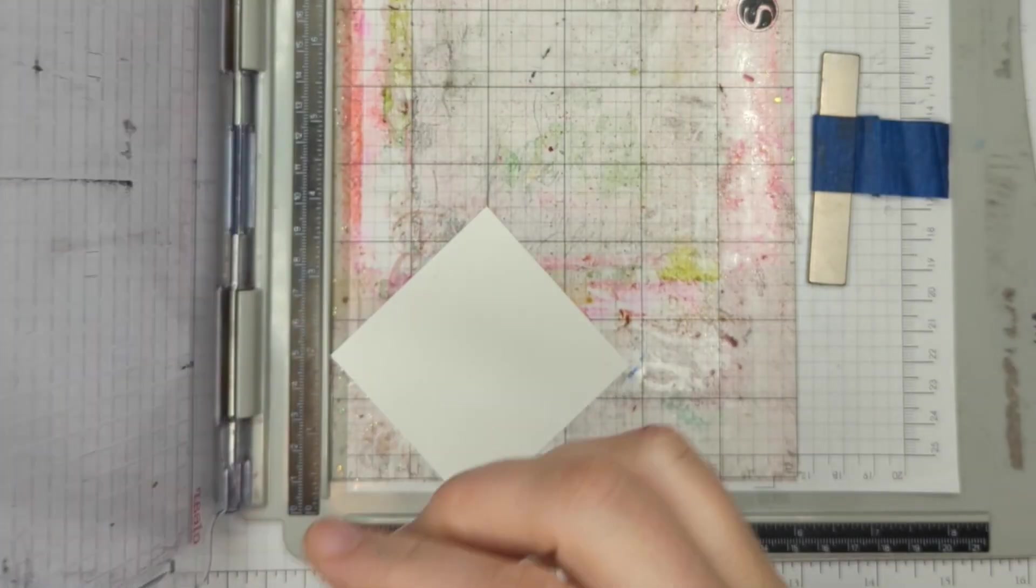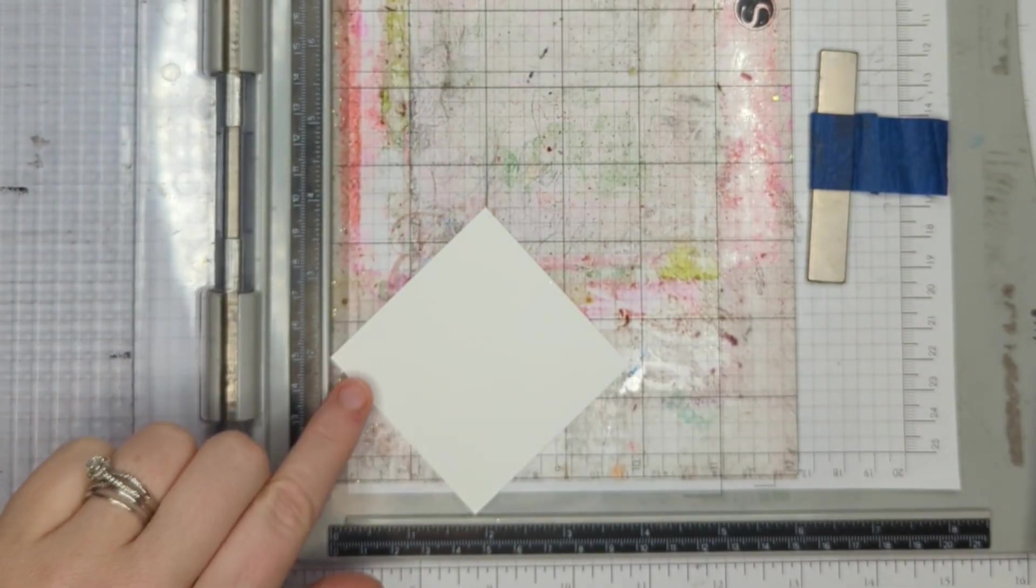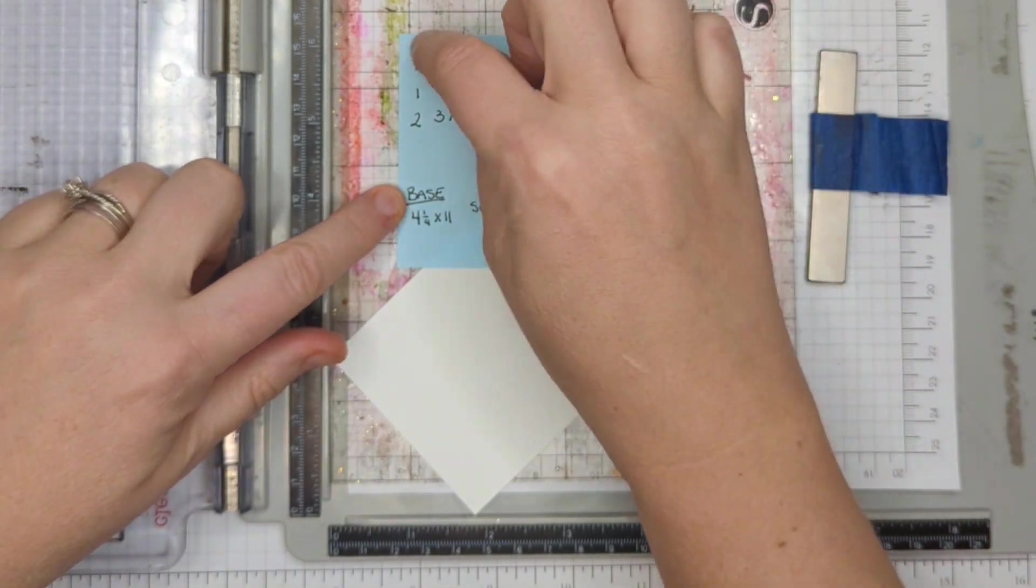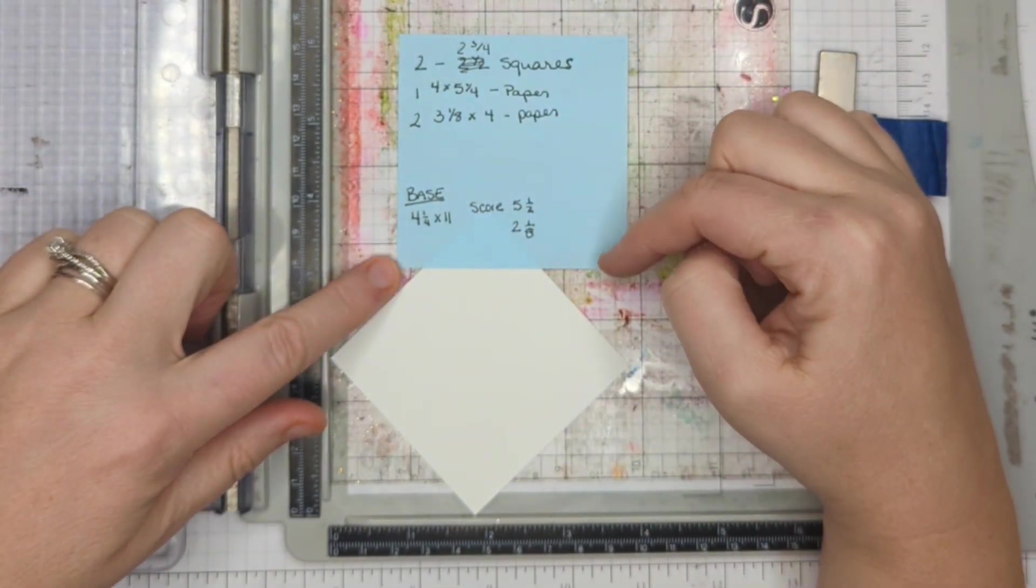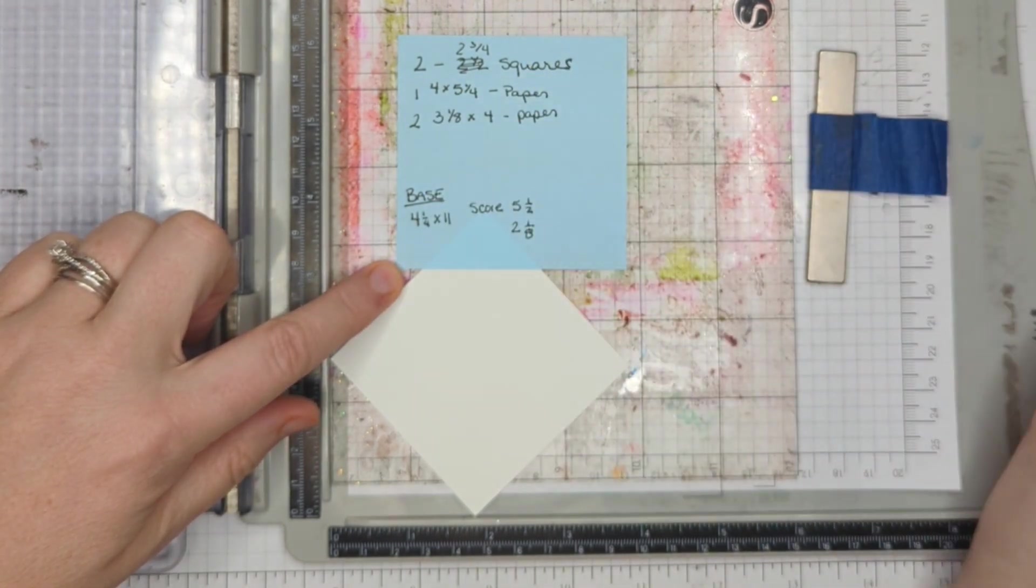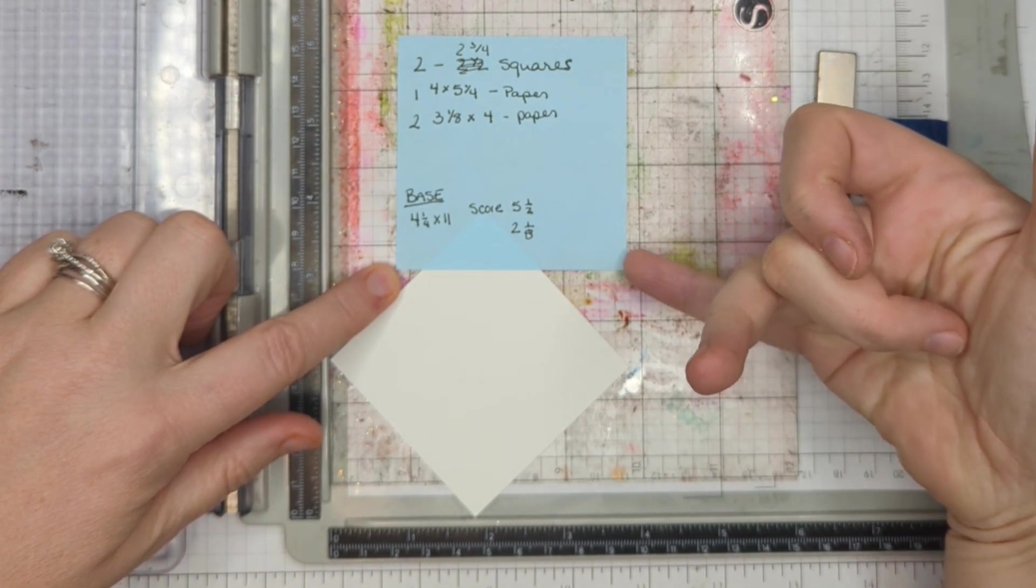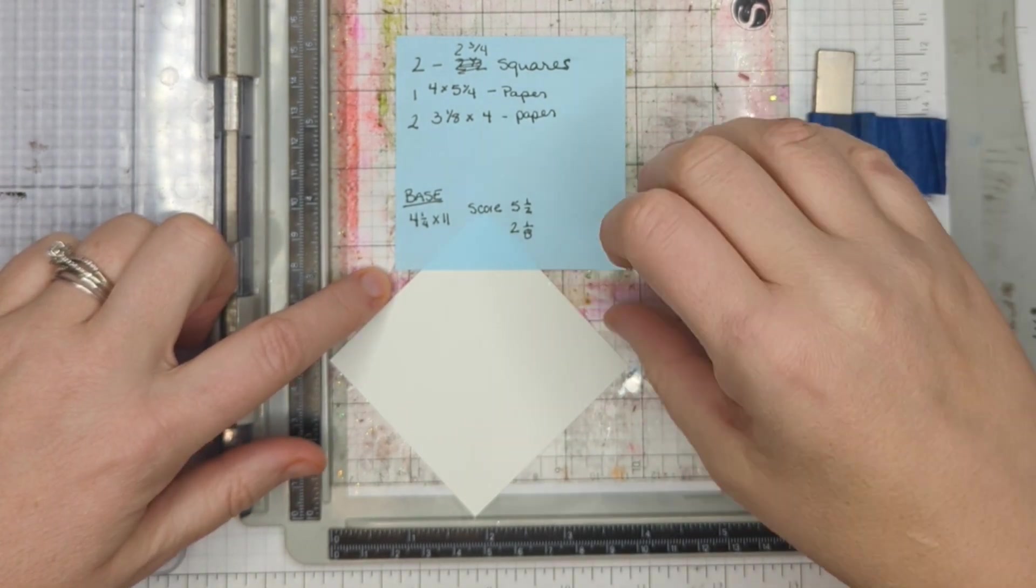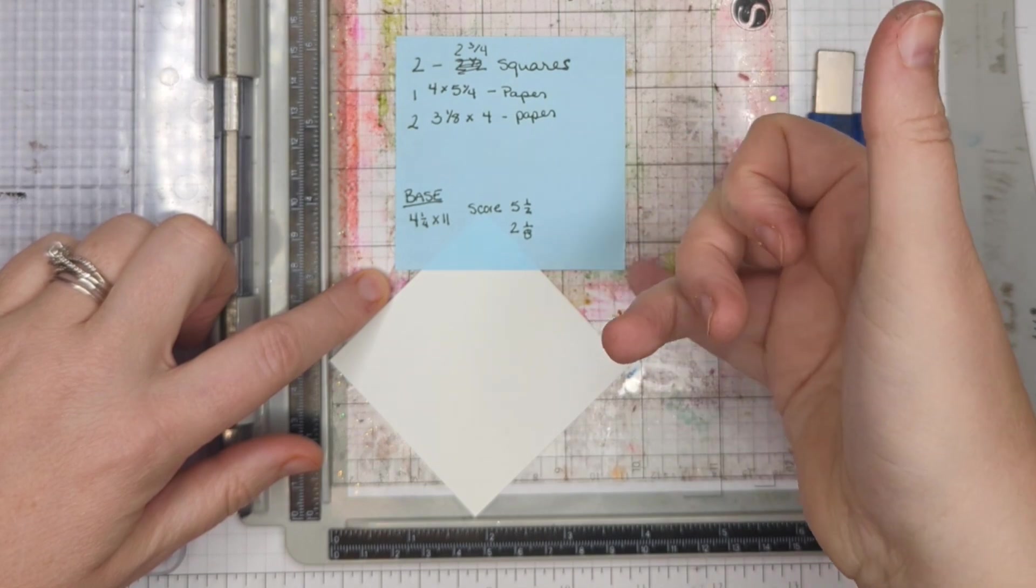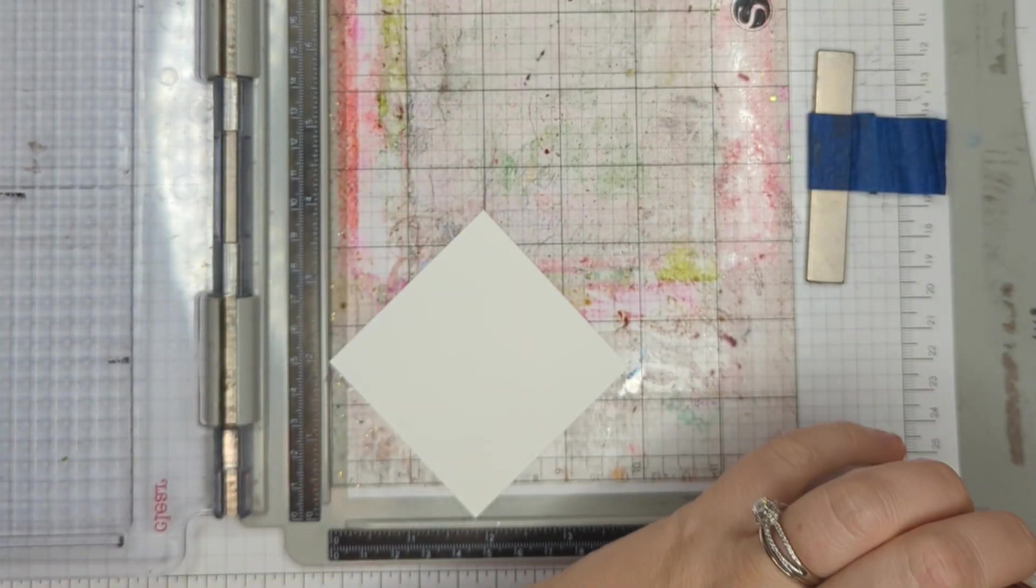In here I have a piece of paper. This piece of paper is two and three quarters by two and three quarters square. Let me set this here. These are all the measurements for this card. I will put these up on the webpage, but if you want to take a screenshot of that, so you have that information there too.